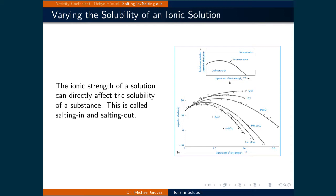This arises from the fact that at low ionic concentrations, ions of opposite charge will associate with one another, which lowers the potential energy of the system, leading to a higher affinity for the solution to dissolve a higher concentration of ions. However, as more ions are introduced, like charges will interact with each other more strongly, raising the potential energy of the system and reducing the affinity for the solution to dissolve ions. Therefore, the ionic strength of a solution can directly affect the solubility of a substance.